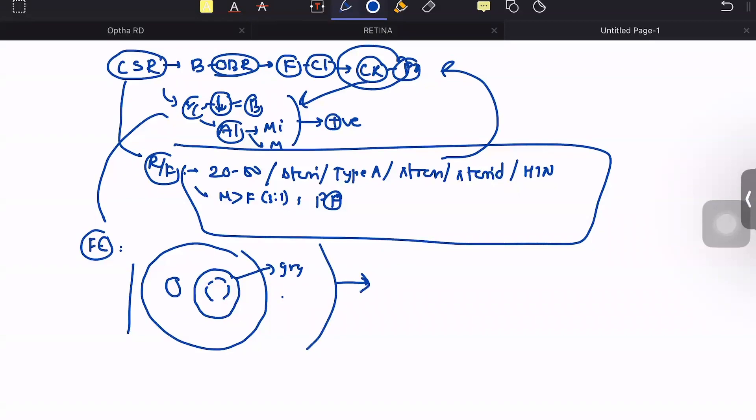We send patients for investigations. First is fundus fluorescein angiography where we see two patterns: ink blot pattern and smoke stack pattern, with ink blot being more common. On optical coherence tomography, the choroid is normal and the retinal pigment epithelium is slightly detached.